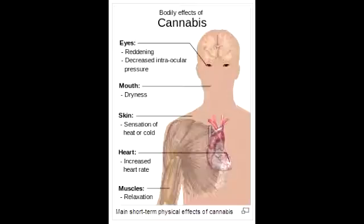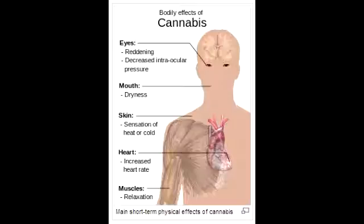What is the prescription form of cannabinoid? The prescription form of cannabinoid is dronabinol, which is a tetrahydrocannabinol isomer. Dronabinol is used as an anti-emetic in chemotherapy as well as an appetite stimulant in AIDS patients.